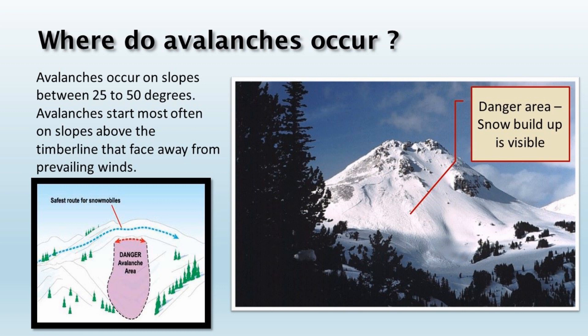The location where avalanches begin is normally quite predictable. They often occur on steep slopes between 25 and 50 degrees. They normally start above the timberline and they occur in the slopes of the mountain facing away from the prevailing winds, basically in sheltered areas where snow can be built up. These areas are typically quite visible and as you can see in this photo, they accumulate high concentrations of snow.